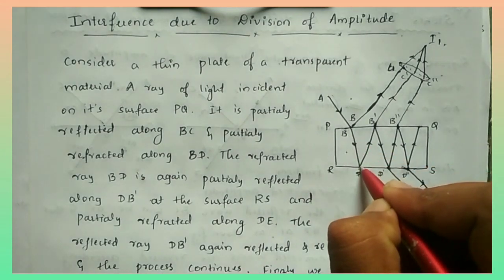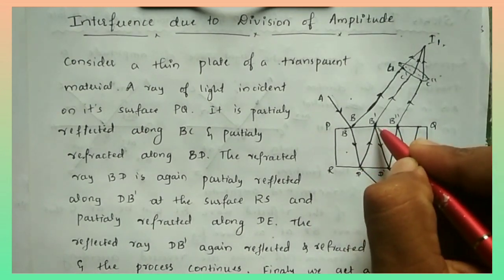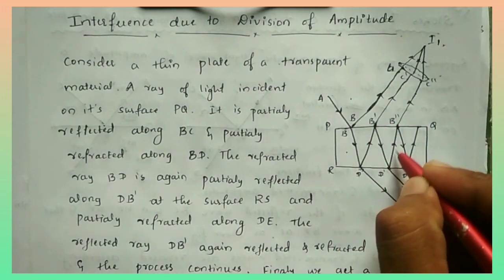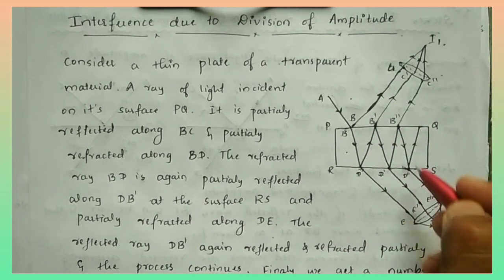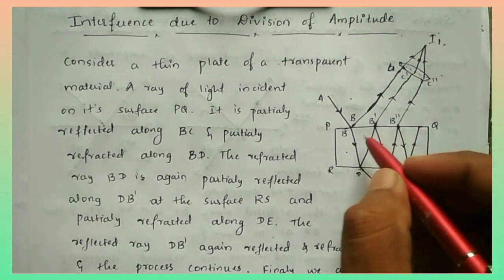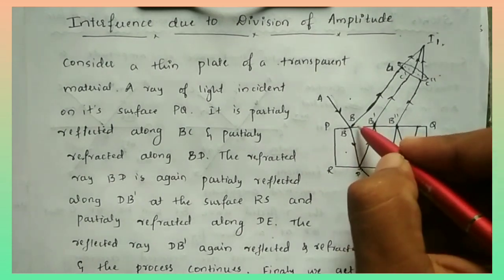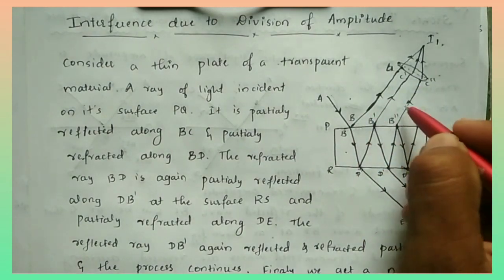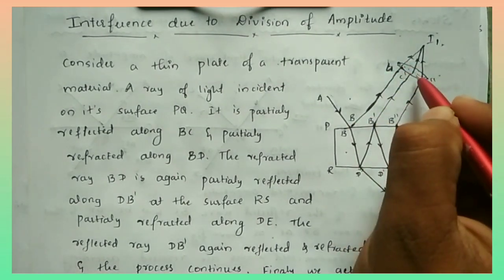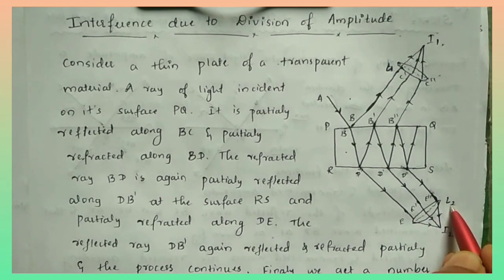The refracted ray is again reflected and transmitted, and this reflected ray is again transmitted and refracted. This process of reflection and transmission takes place continuously. The many reflected rays are combined together in lens L1, and the transmitted rays are combined together in lens L2.